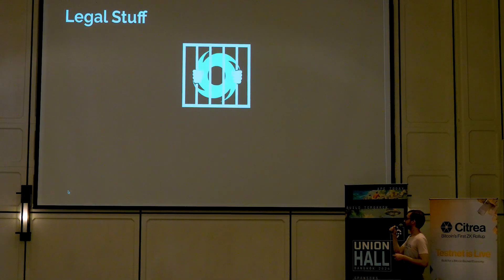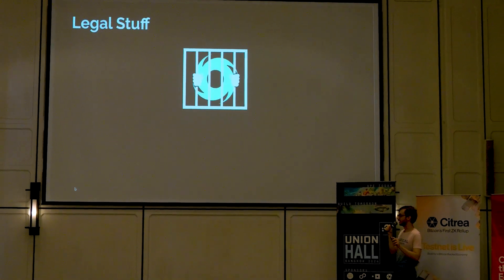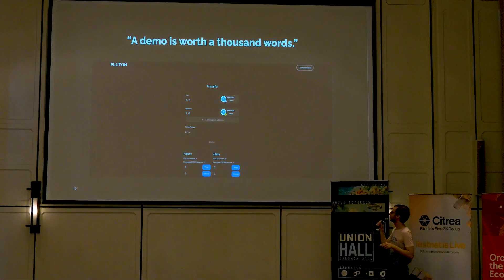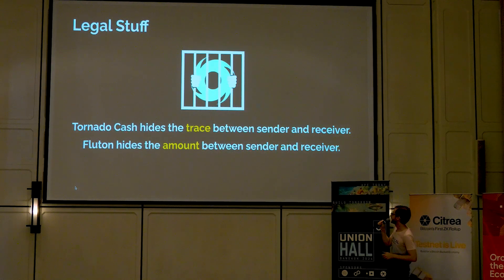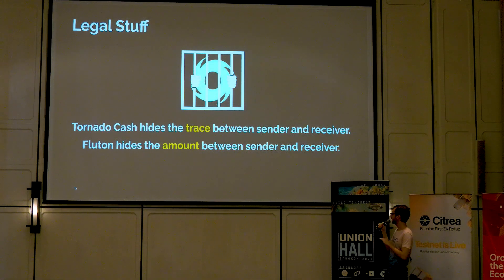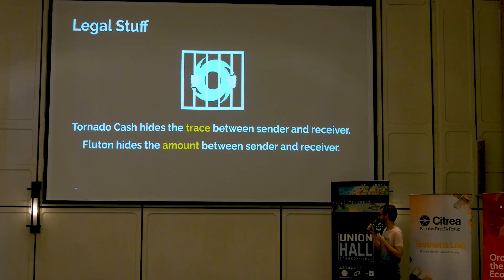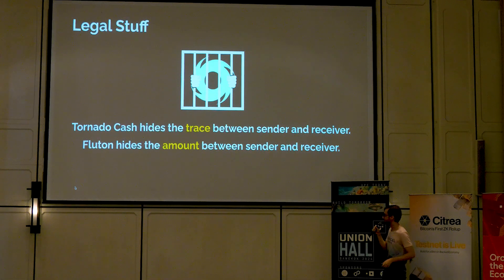Let's talk about the legal stuff. You might have thought this system looks like Tornado Cash. But Tornado Cash actually hides the trace between the sender and receiver, while Fluton hides the amount between the sender and the receiver. Tornado Cash uses a system called mixers — the mixers completely hide the trace between the sender and the receiver. The sender sends tokens to the mixer, and when received as a different user, the trace becomes almost impossible to follow. But we, as Fluton, hide the amount — we don't hide the trace between the sender and the receiver.